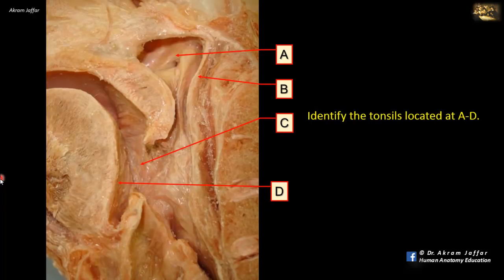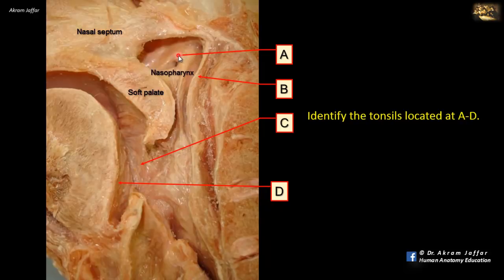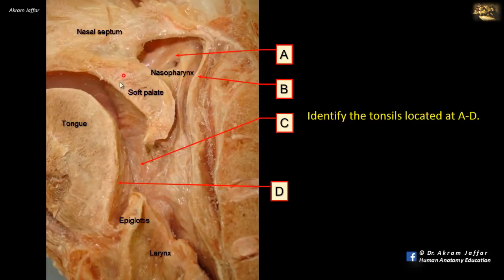Identify the tonsils located at A to D. This is a mid-sagittal section of the head in the region of the nasopharynx and oropharynx. You can see the soft palate, the nasal septum, the tongue, the epiglottis, and behind it the larynx. There are many lymphoid nodules located within the mucosa, acting as a barrier against infection at the beginning of the respiratory and digestive passages. Together they form a ring of lymphoid tissue called Waldeyer's ring.